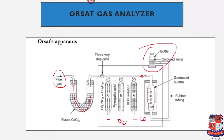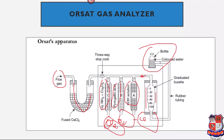Similarly, the third valve is operated: the water level in the burette rises, and the gas flows into the liquid amino cuprous chloride solution, which absorbs CO. Since the initial mass in each chamber is already known, from the change in volume we can determine how much CO, O2, and CO2 are present in the flue gas sample. The remaining volume corresponds to N2.